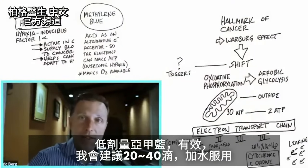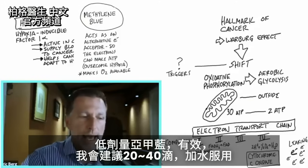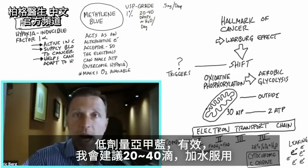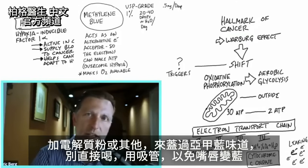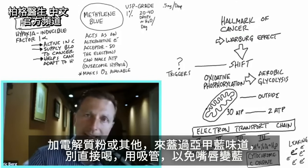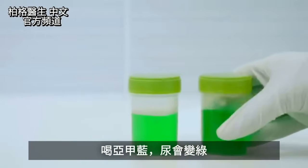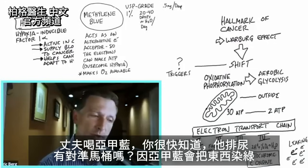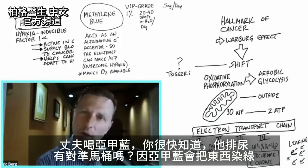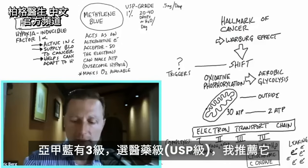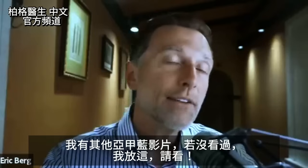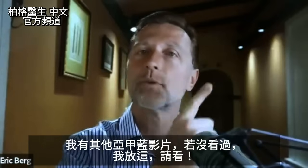The beneficial effects of methylene blue occur at low doses. I would recommend about 20 to 40 drops in some water — maybe add electrolyte powder to cover the taste. Drink it with a straw because it will turn your lips blue, and it does stain your urine green. There are three grades of methylene blue; the one you want is pharmaceutical grade, called USP grade. If you haven't seen my other video on methylene blue, I've linked it here.